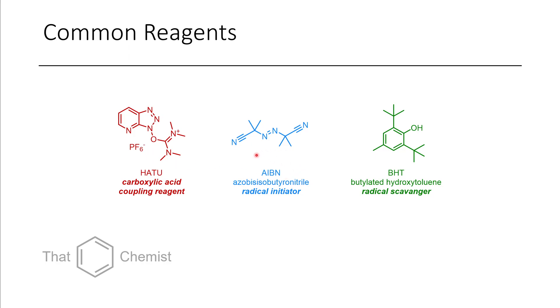Here in the middle, we have AIBN. This is used as a radical initiator. When you cook this puppy up, this kicks off nitrogen gas, and it generates a radical on either spot respectively. And this is used in the production of polymers.